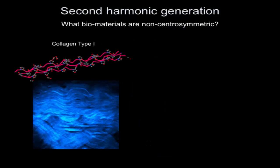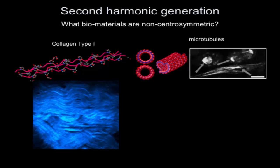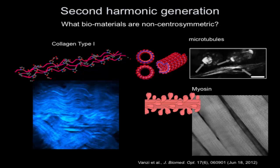Second harmonic generation - that image shows collagen in the dermis. The reason you can see it is because collagen is non-centrosymmetric, mostly due to an achiral ordering of the collagen units. Collagen is one of the few structures in tissues with this property of non-centrosymmetry, which is why you can see it almost exclusively. Microtubules have similar properties and can sometimes be seen in cells. Myosin in muscle tissue can also be seen quite nicely with second harmonic generation.